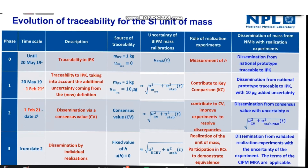Before the redefinition, the IPK existed with zero uncertainty — after cleaning and washing, whatever the weight of the International Prototype of Kilogram was considered to be exactly one kilogram with zero uncertainty. Now, during the measurement of the Planck constant, the realization methods used, like the Kibble balance or XRCD method, had some amount of uncertainty during measurement.